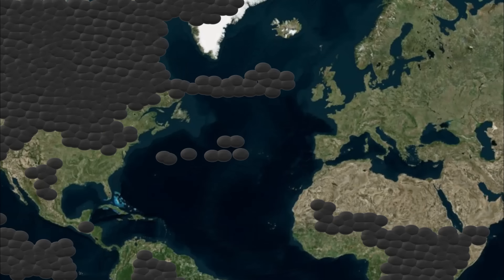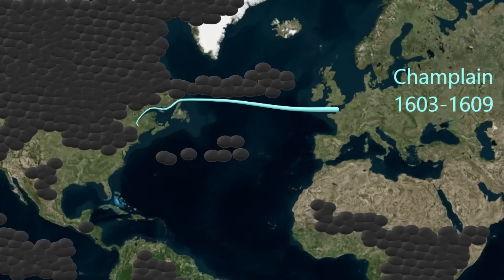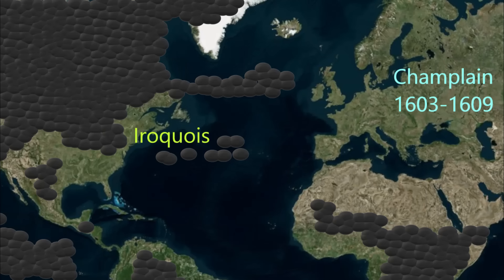France is finding its niche in the northeast. Samuel de Champlain explores the north between 1603 and 1609, pressing further down the St. Lawrence. His journey takes him to the lake in New York State that bears his name. On the New York side of the St. Lawrence is the powerful Iroquois Confederacy. On the Canadian side of the St. Lawrence is the Huron Nation.